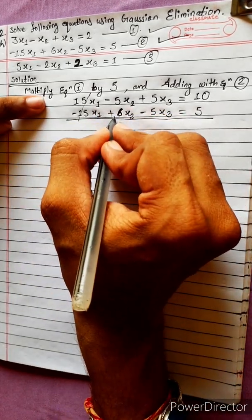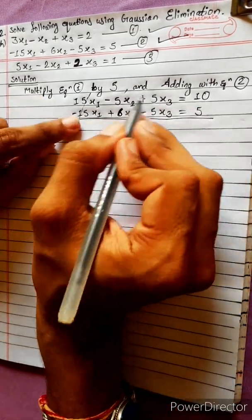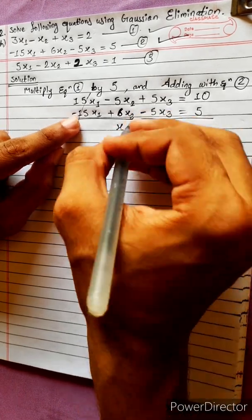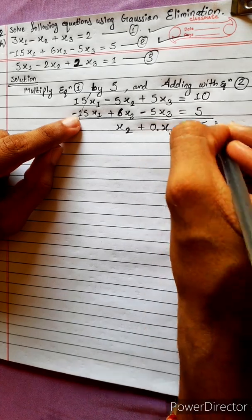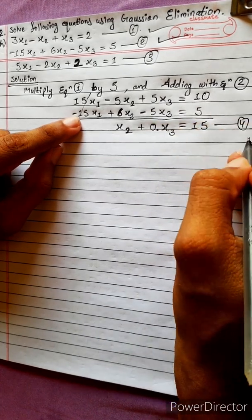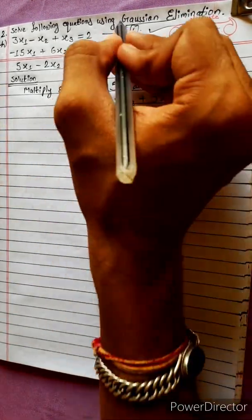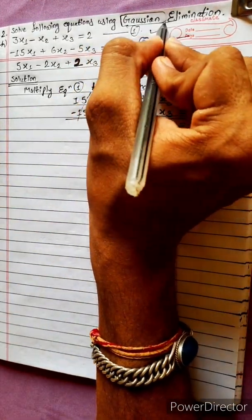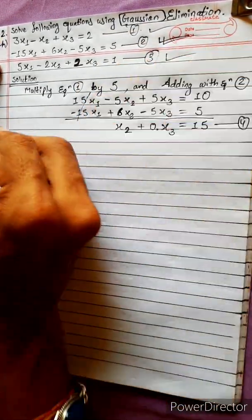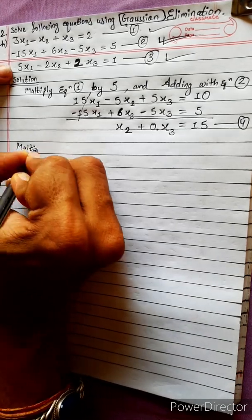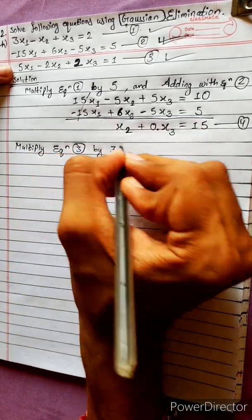Adding these: the x1 terms cancel directly to 0. The x3 terms also cancel. We are left with the x2 term. So 1 into x3 — we need to handle the x3 coefficient: this gives 15x3.